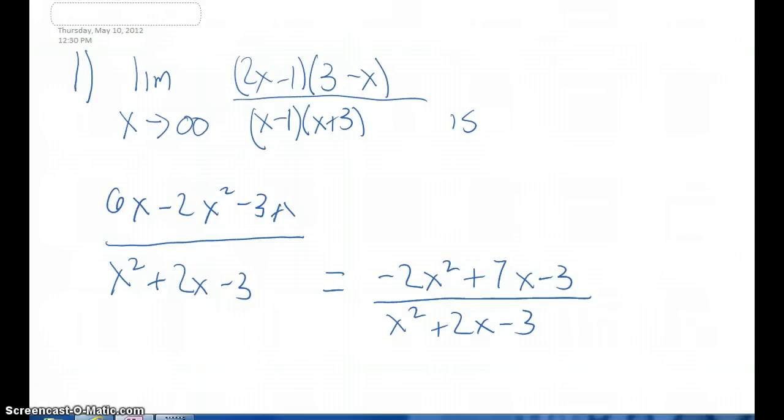Once we multiply out the binomials and then combine like terms, we have negative 2x squared over x squared as the leading coefficients.